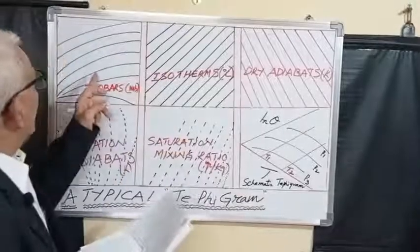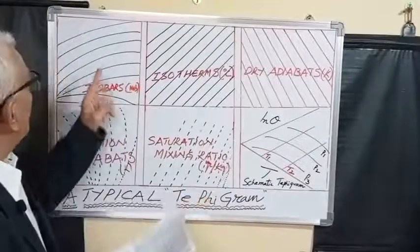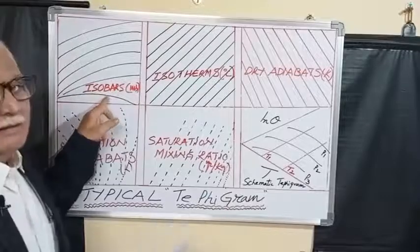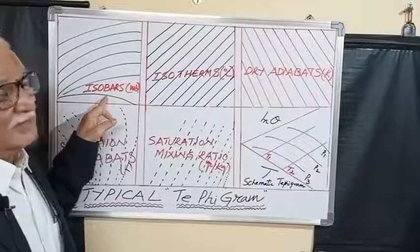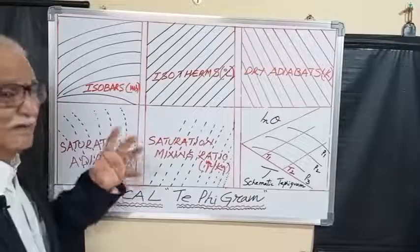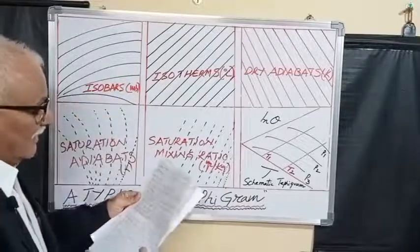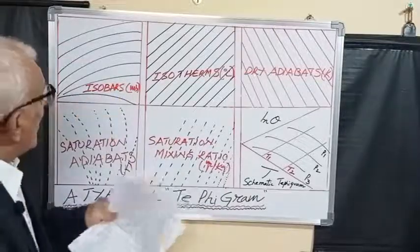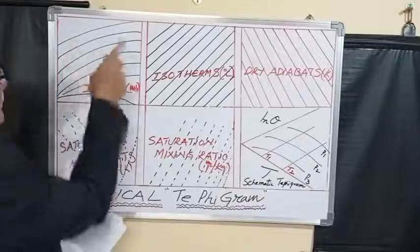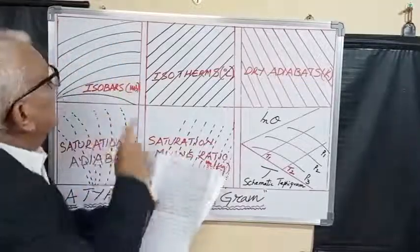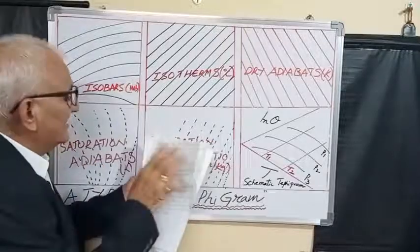Isobars in the T5 gram are lines connecting points of equal pressure — units are bars or millibars. In the T5 gram, isobars are nearly horizontal lines. This is the first characteristic.